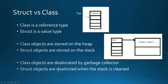Struct objects are stored on the stack. To understand how the stack is being cleaned up, we need to understand how the stack works. The stack always stores a reference to the top of the stack. For example, if we are invoking a method and we are initializing a new struct object inside of this method, the pointer to the top of the stack will be moved up to point directly at this newly allocated object.